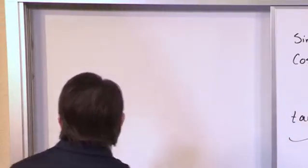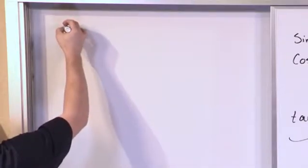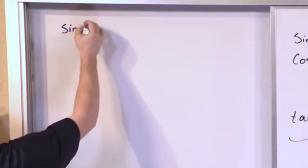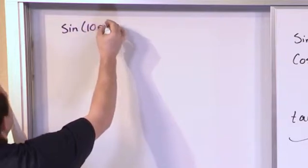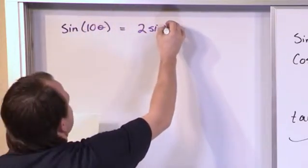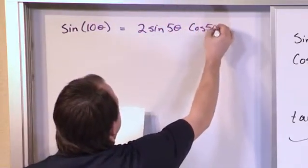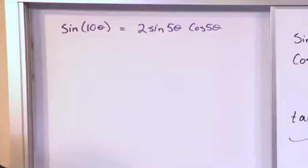Now to get started, what if we had something like, if we wanted to prove that sine of 10 times theta was equal to 2 times the sine of 5 theta times the cosine of 5 theta. How would we do that?